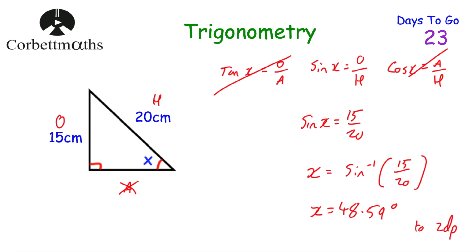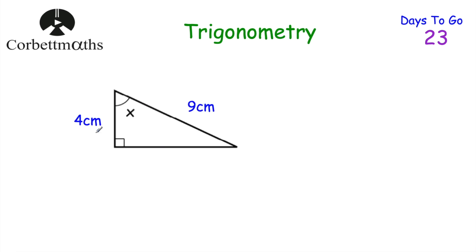Here's a question for you to try yourself. We've got a right-angled triangle where one length is 4 centimetres and another is 9 centimetres. Can you work out the size of the angle? Pause the video and try it now. When labelling the sides: the side opposite the right angle is the hypotenuse, the side opposite the angle is the opposite, and the remaining side is the adjacent.